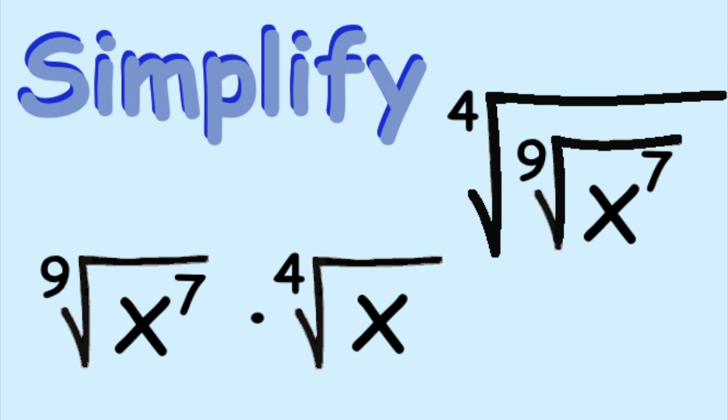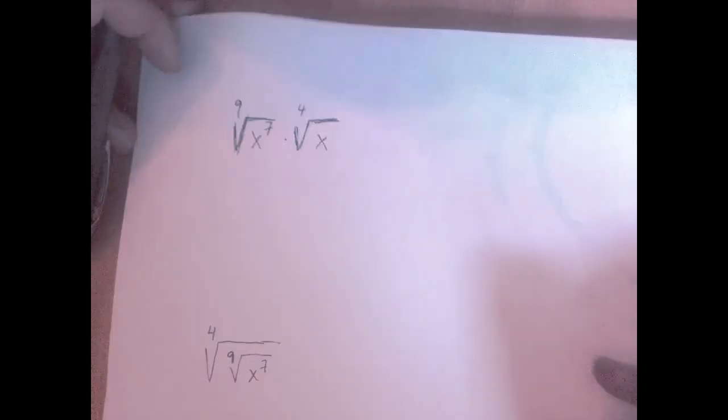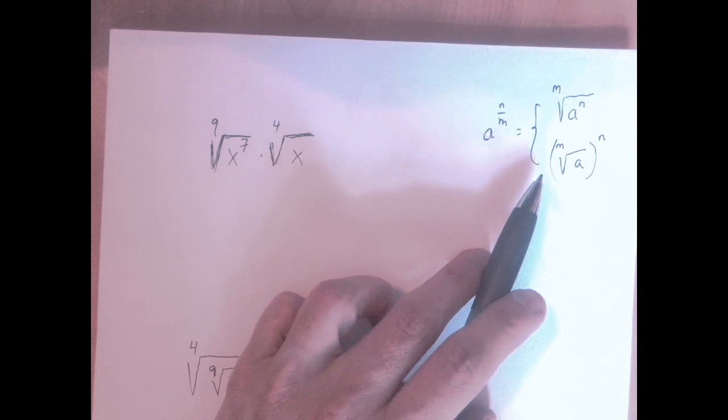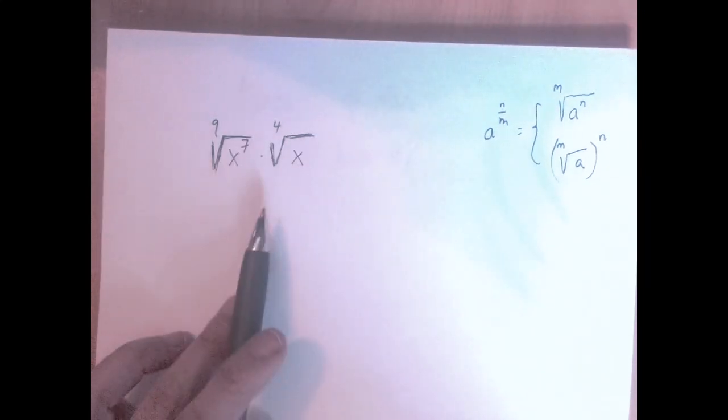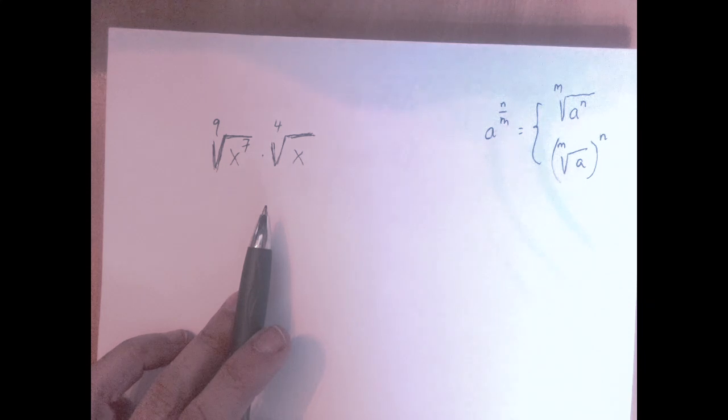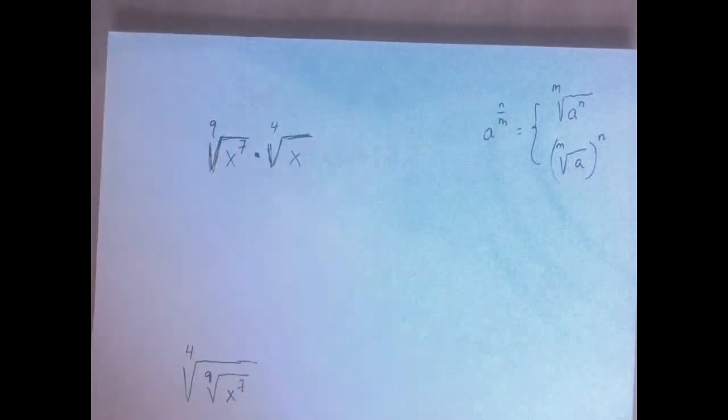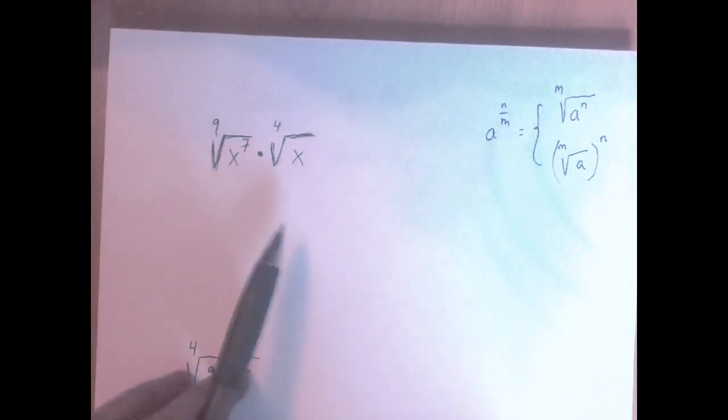We have two expressions that we are to simplify, and we have a hint we should use exponential notation to simplify the expressions given. First of all, we are going to use this rule to transform these expressions into purely exponential form, and then we are going to use rules of exponentiation to reduce it all to just one exponent, and then we are going to go back.